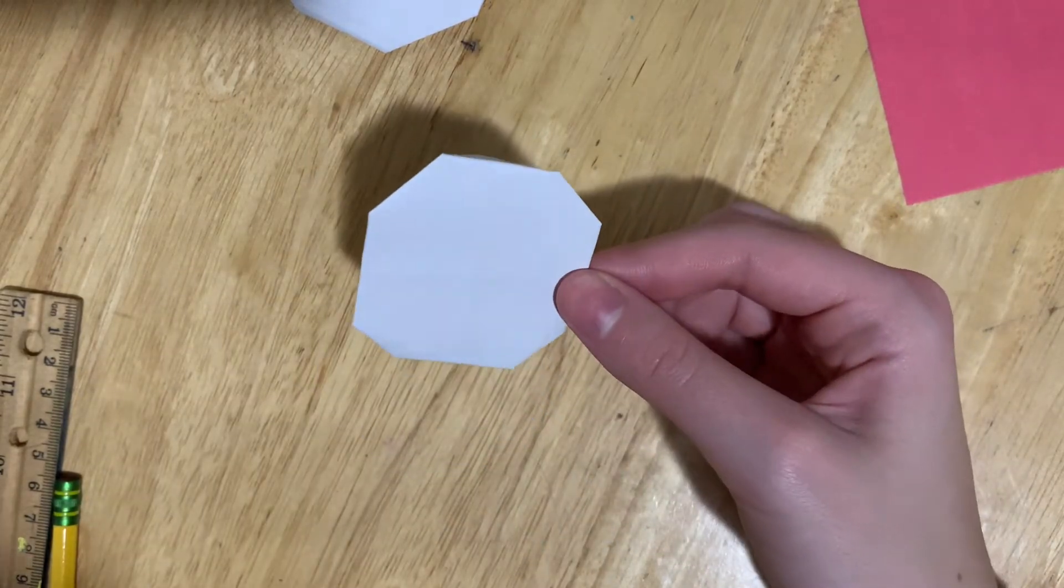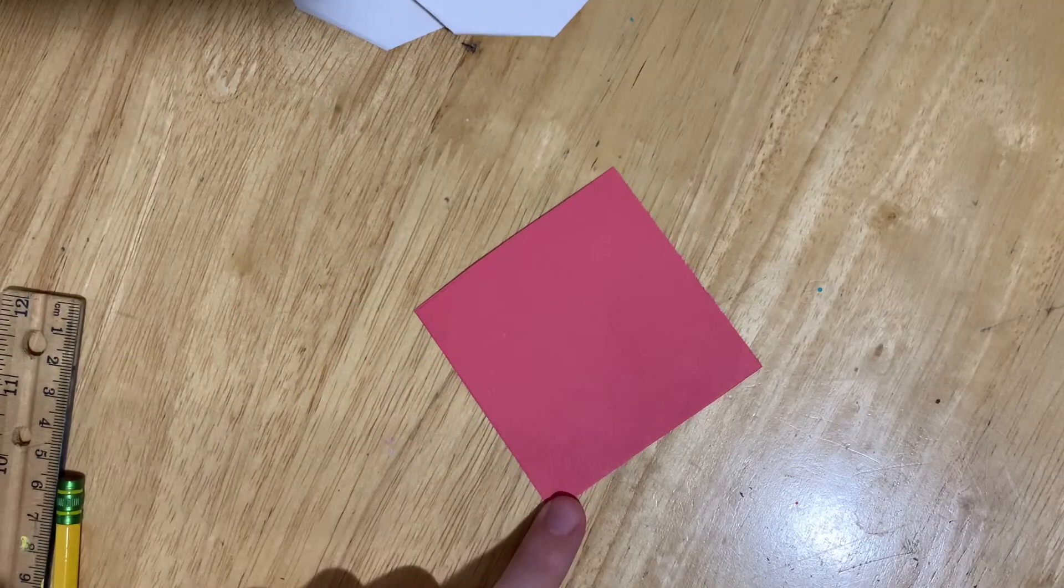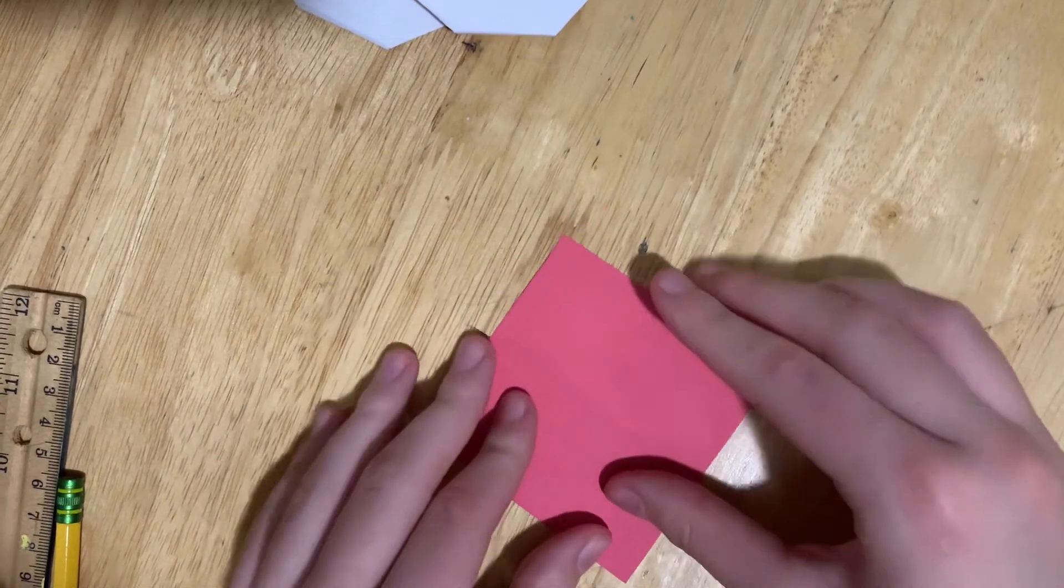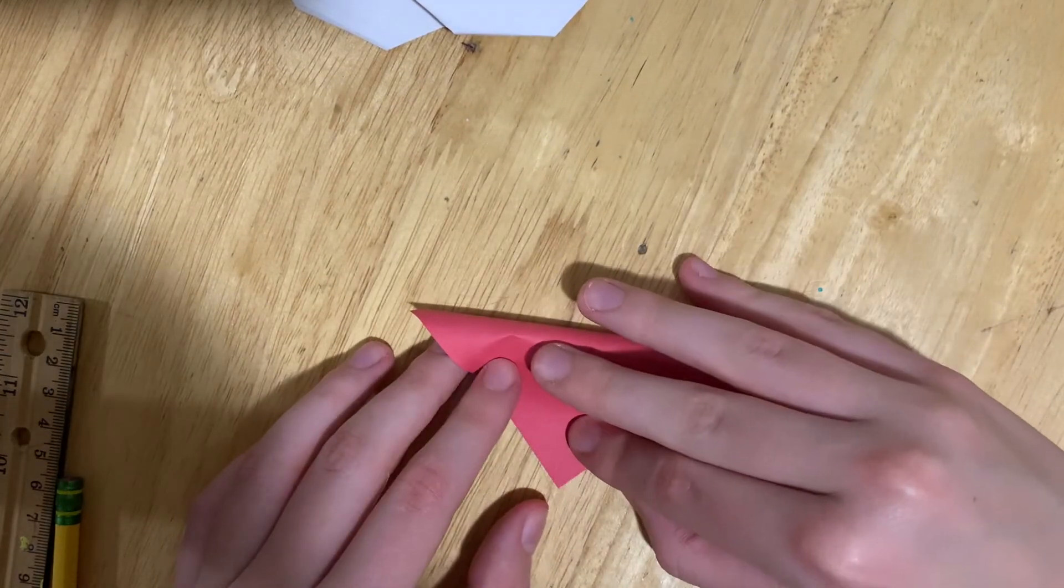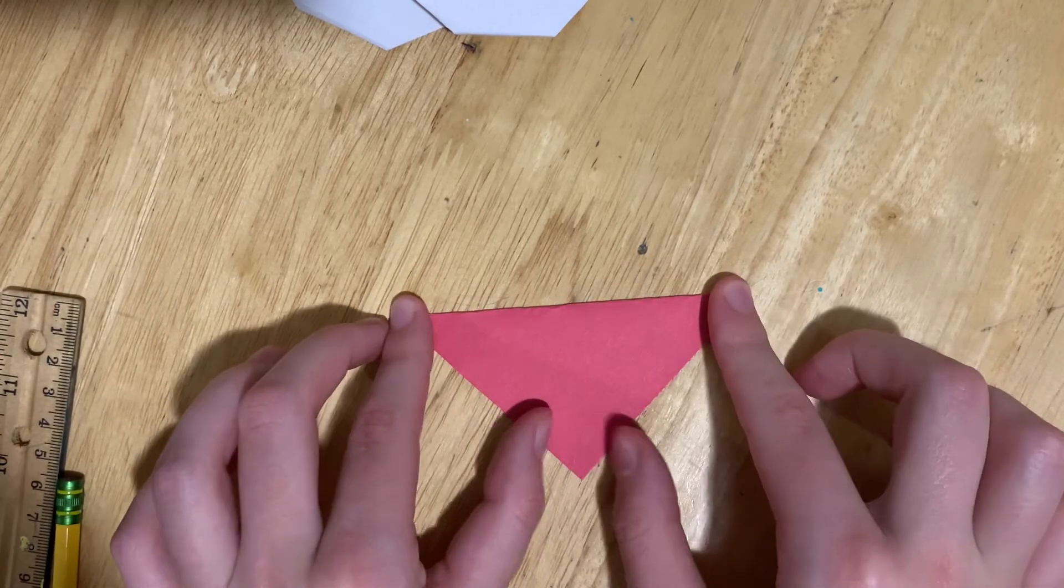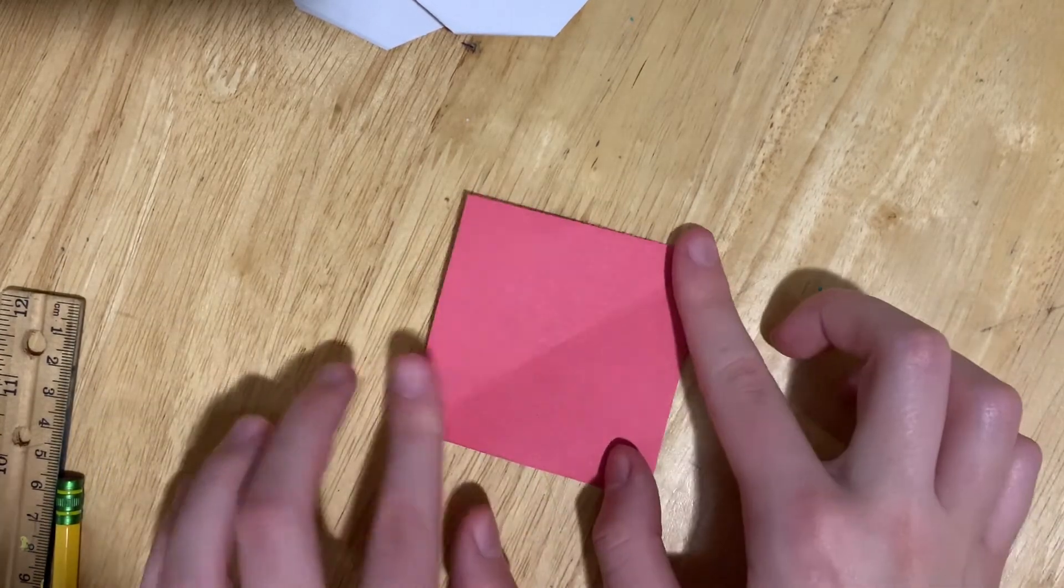We're going to make the hat of the snowman. First, fold the triangle and then just open it up.